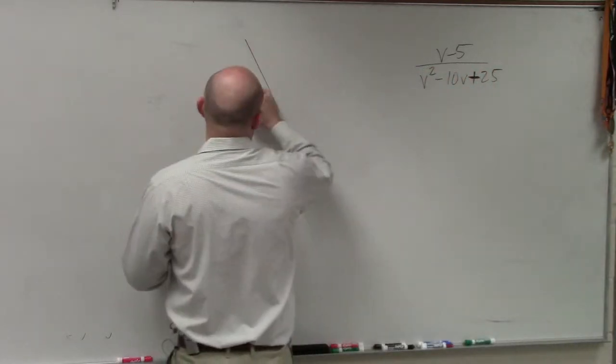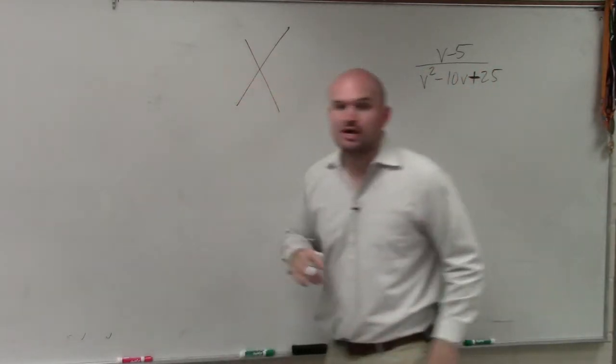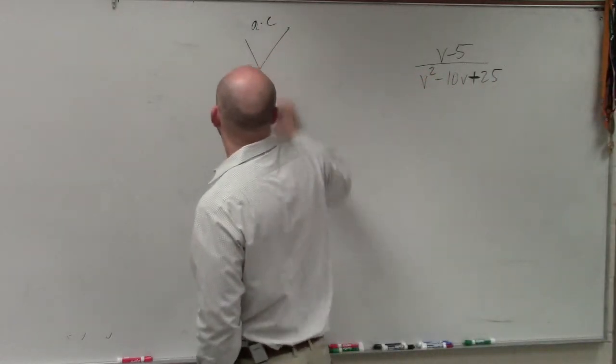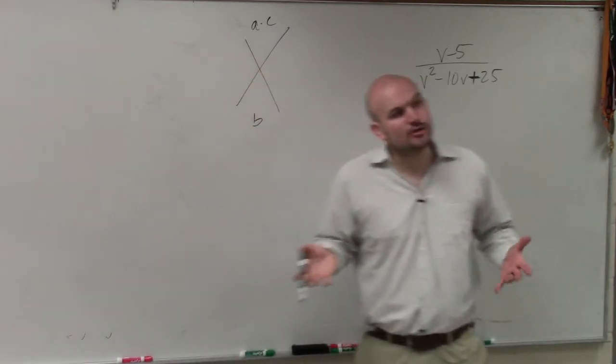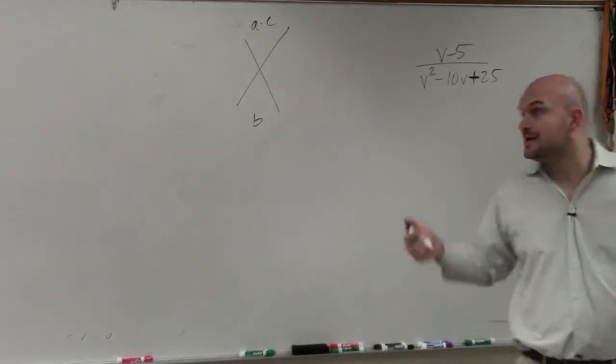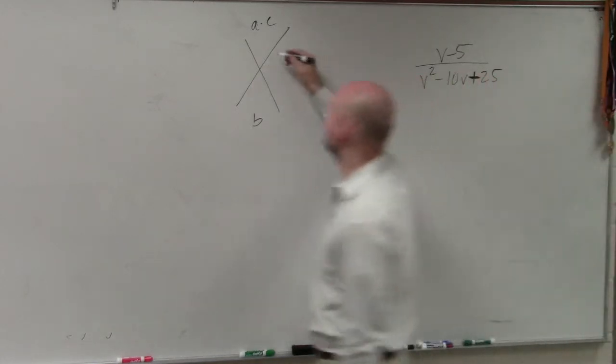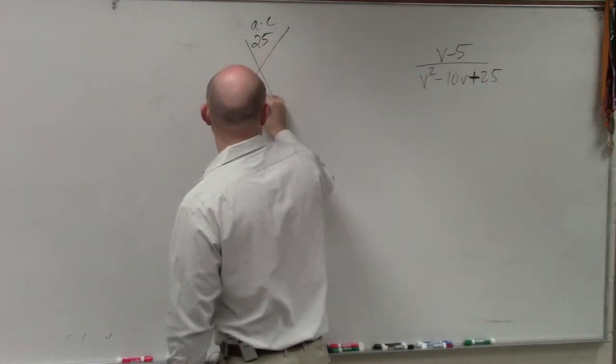So if you guys remember, what we did for factoring this one is we used our diamond method. We did our a times c, and then we did the b. Whenever you have a trinomial, you got to look to the a times c. So in this case, a, which is 1, and c, which is 25. So I have 25, and then I have negative 10.